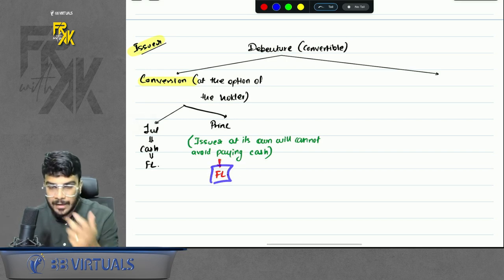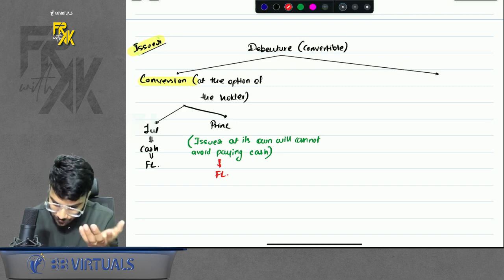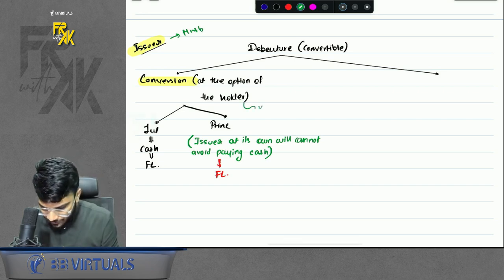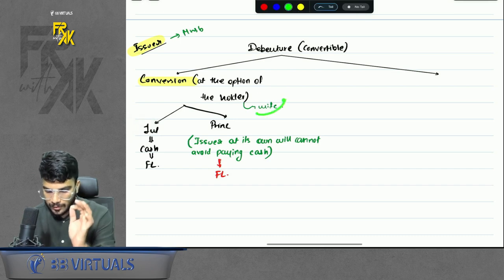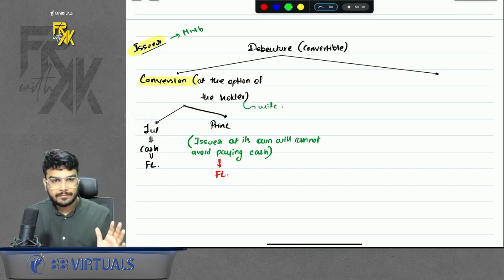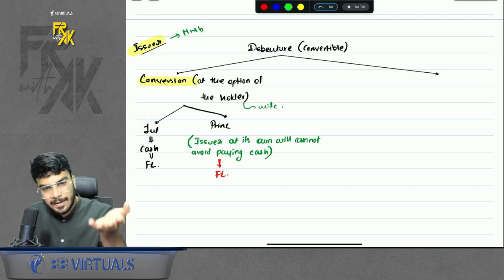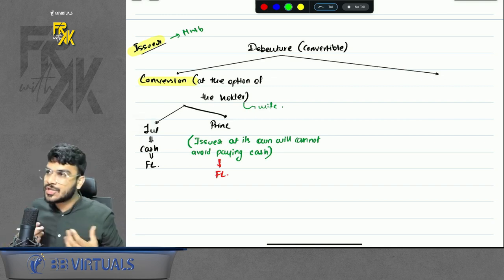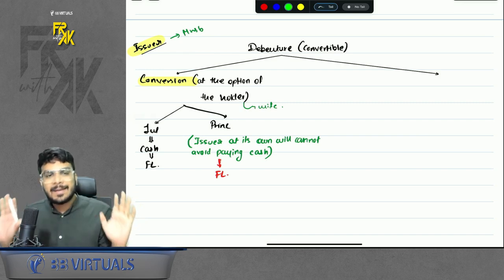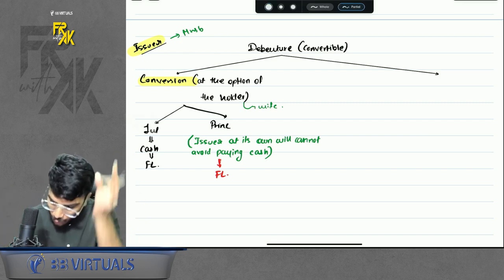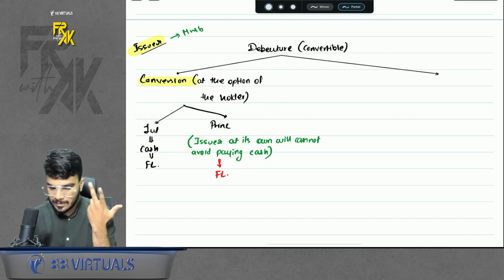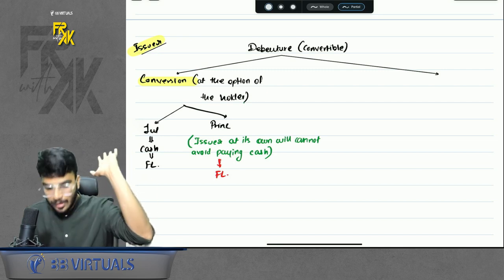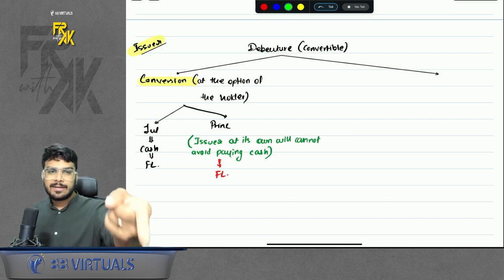If you want to understand this in a better way — suppose this issuer is a husband and this holder is a wife. If the wife says she wants to go to shopping, can the husband refuse? The answer is no. That means the husband has a financial liability. The wife can herself refuse — she can say she doesn't feel like going to shopping — that is the husband's benefit. But if the wife says she wants to go for shopping, can the husband refuse? The answer is no. That means husband will always have financial liability. The issuer is the husband — if he cannot refuse, it is a FL.